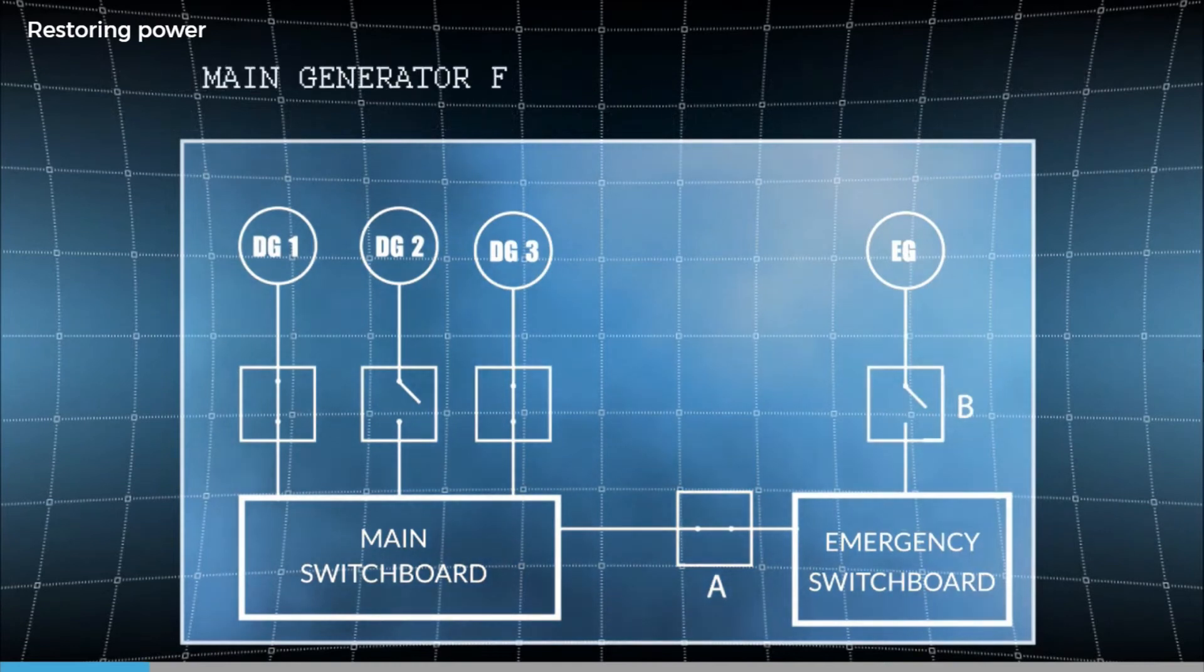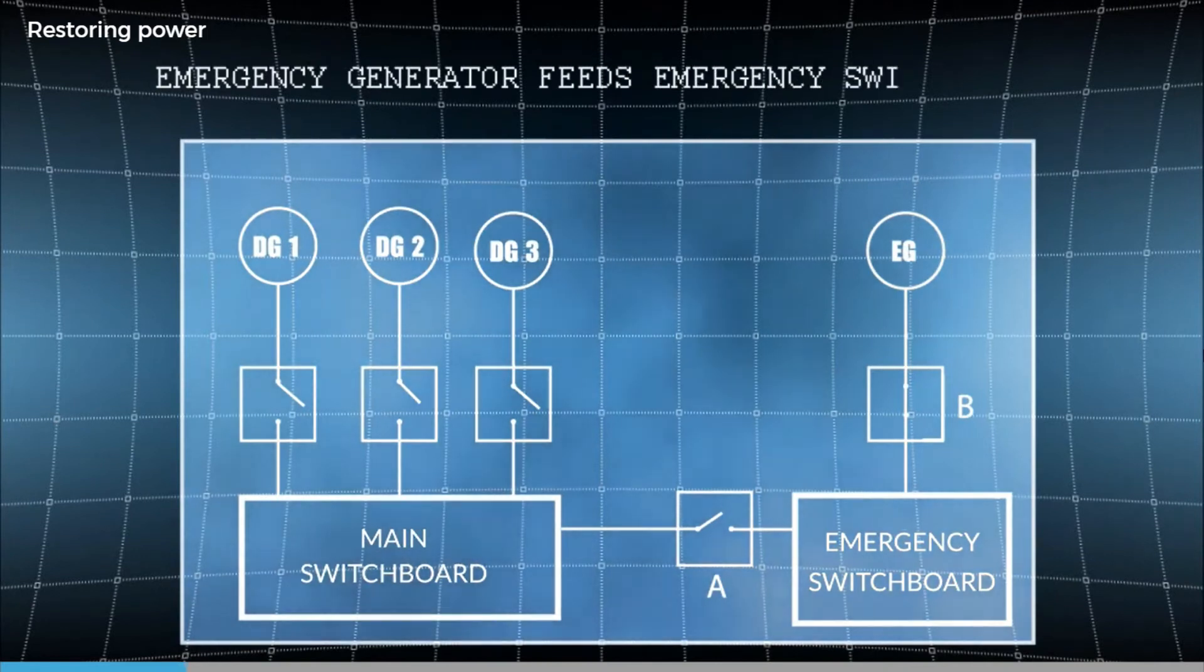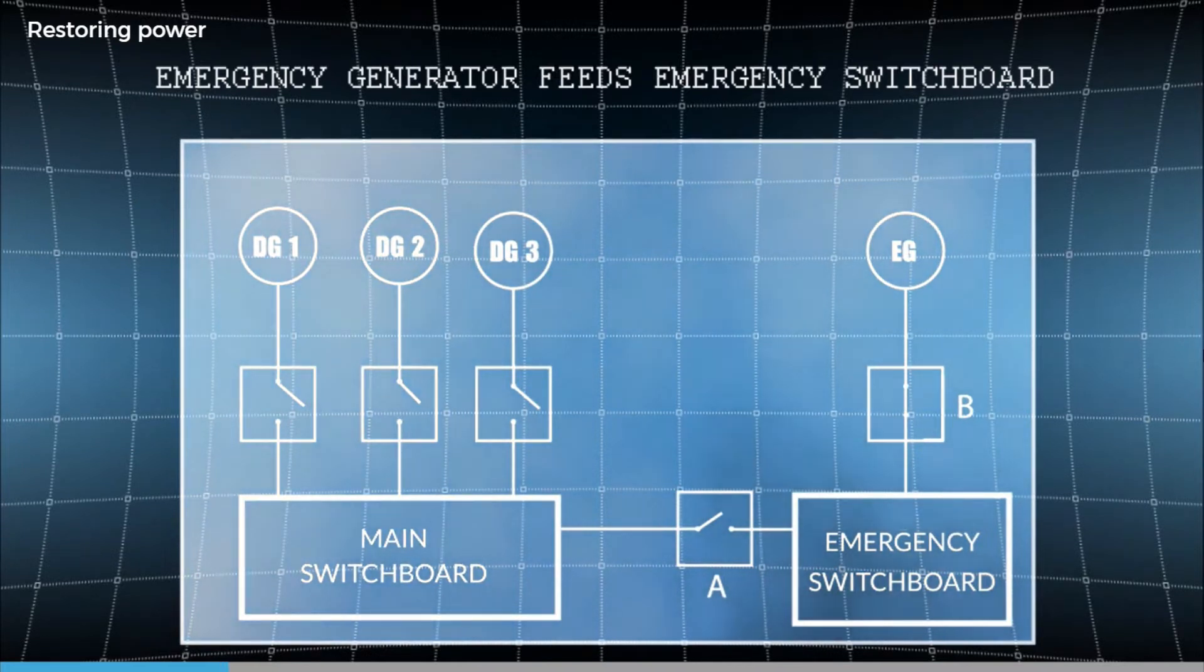This means we can feed the emergency switchboard either from the main switchboard or the emergency generator. What we can't normally do is backfeed the main switchboard from the emergency generator.